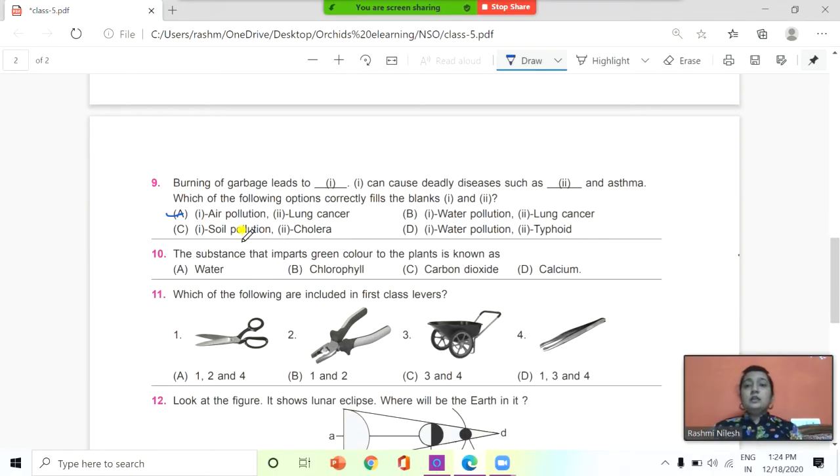Next, 10th question: the substance that impart green color to the plants is known as water, chlorophyll, carbon dioxide, or calcium? And the answer is chlorophyll, B.